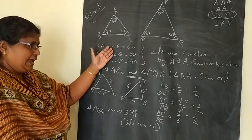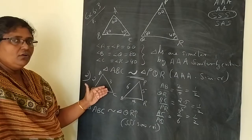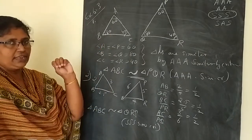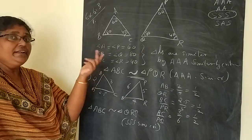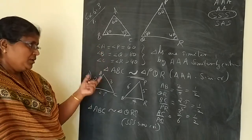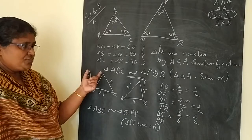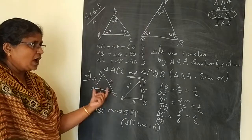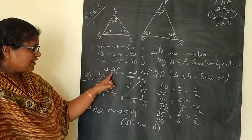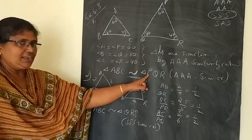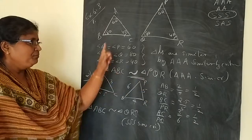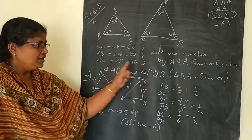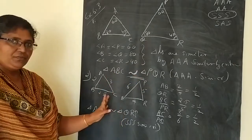So, first one we got by AAA and second one we got by SSS. Only four criteria are there — AAA and AA are both the same. Remaining questions you have to do. Check like this. This is important — how to write. If you write A, write the corresponding letter next to it. If you write B, write its corresponding letter. Don't write all at once A, B, C, P, Q. You have to see each and every letter.